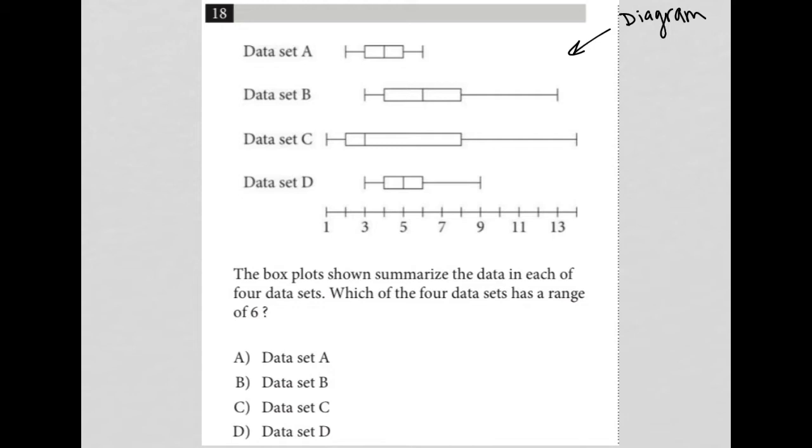What we have here are what are called box and whisker plots, where the first line here represents the lowest value of the data, and this line here represents the highest data point, highest value.